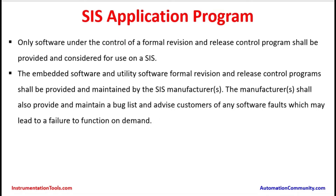Only software under the control of a formal revision and release control program shall be provided and considered for use on a SIS. The embedded software and utility software formal revision and release control programs shall be provided and maintained by the SIS manufacturers. The manufacturers shall also provide and maintain a bug list and advise customers of any software faults which may lead to a failure to function on demand.